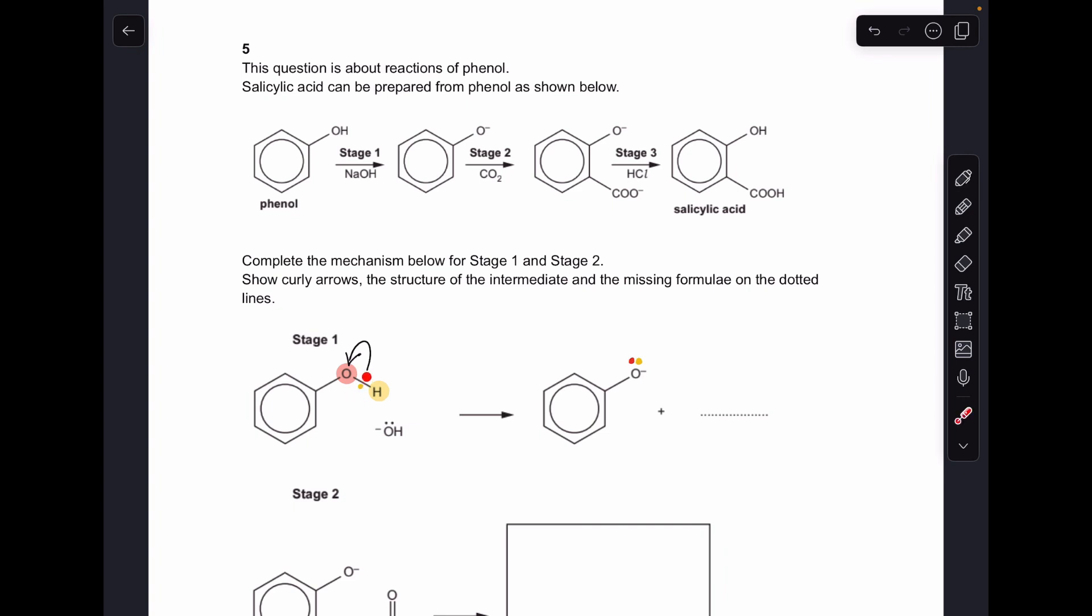The hydrogen is going to break off as an H plus ion because it's lost its electron, and it's going to be accepted by that OH minus ion. So the thing on the dotted line needs to be an H2O molecule.